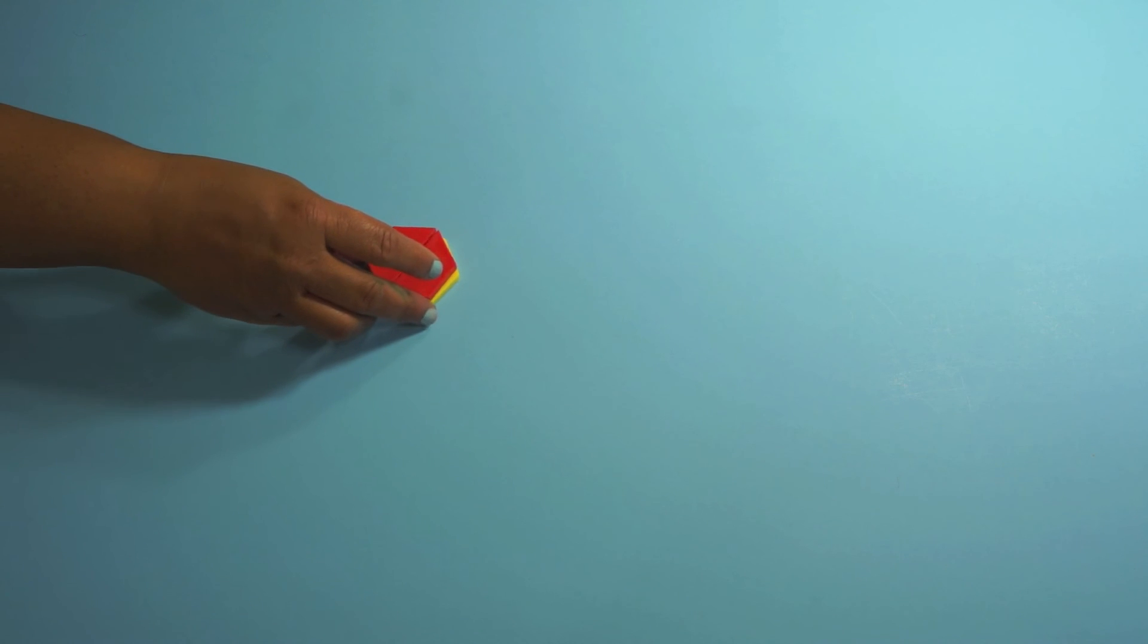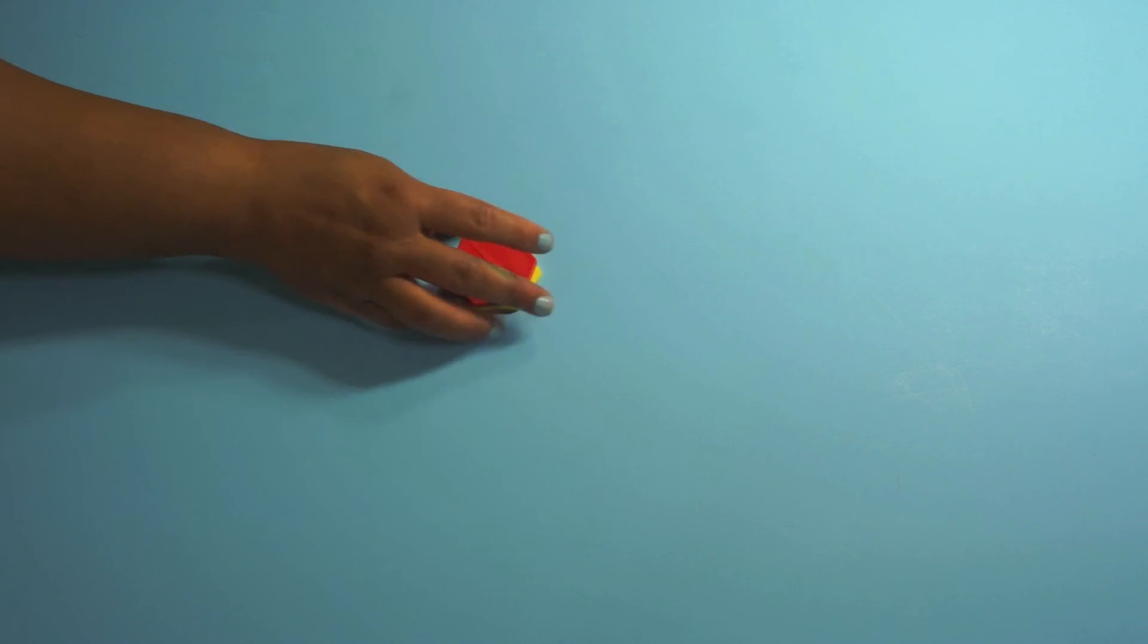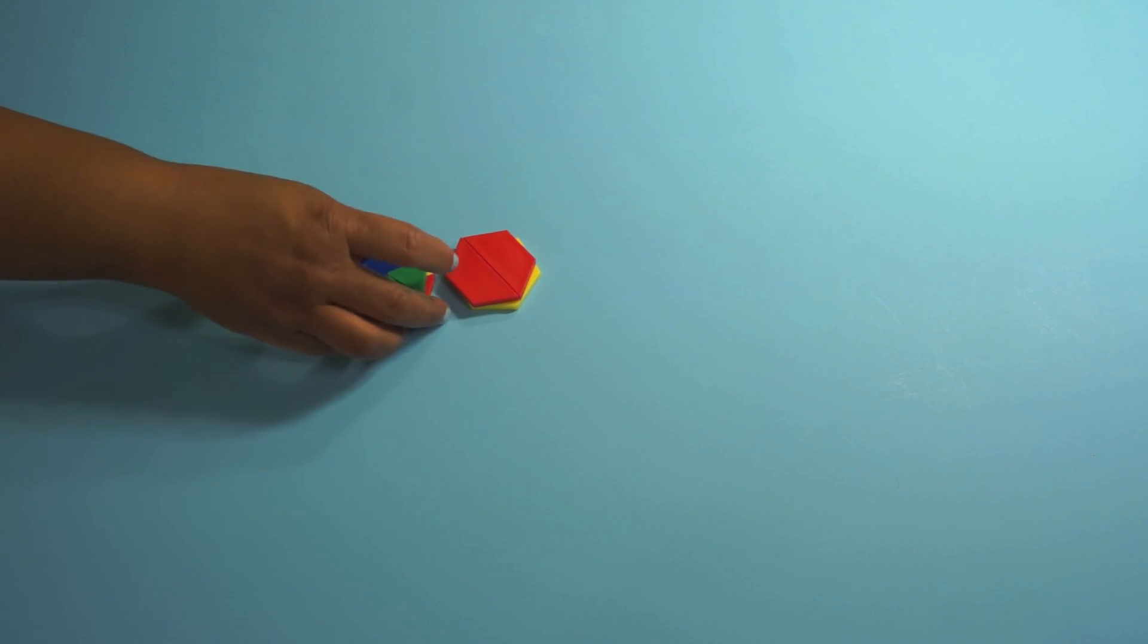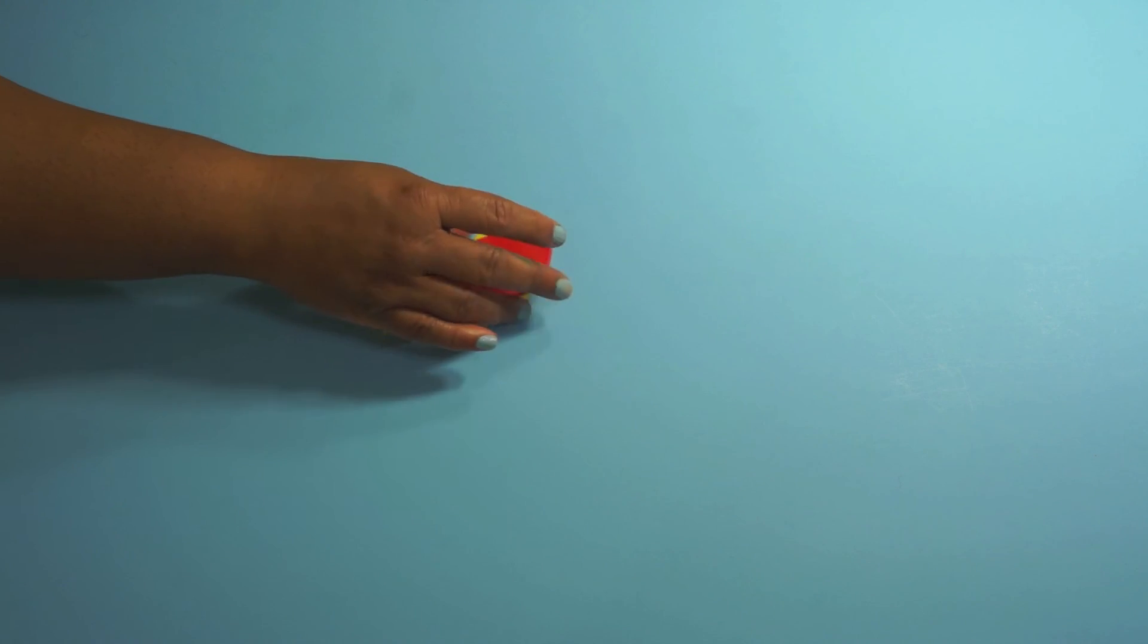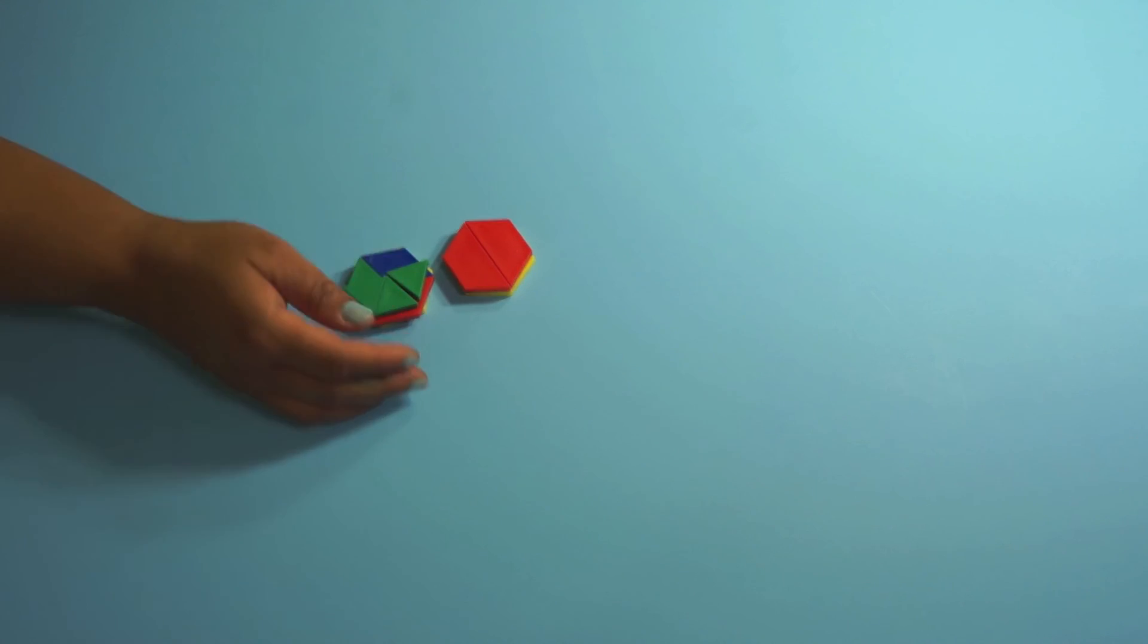The fourth and final area is reasoning about attributes and of shapes and composing and decomposing shapes. So you've got to bring out the pattern blocks and you play the hexagon game. A hexagon can be two trapezoids.